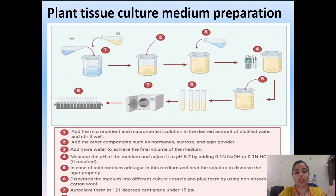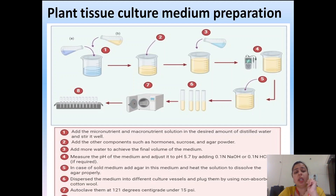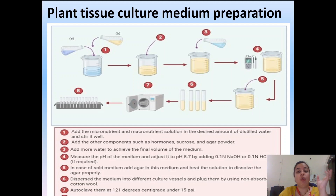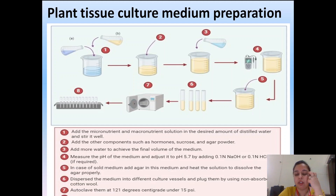Macronutrients are inorganic nutrients required in larger quantities: nitrogen, phosphorus, potassium, calcium, magnesium, and sulfur — these are six macronutrients a plant requires. Micronutrients are required in smaller quantities but are essential; without them there may be deformity or improper growth. Such micronutrients include iron, manganese, copper, zinc, boron, chloride, etc.